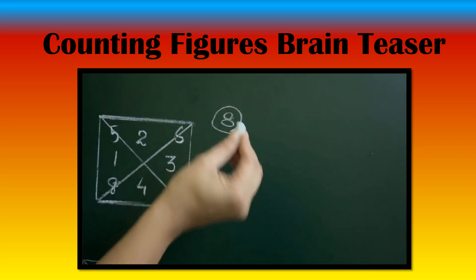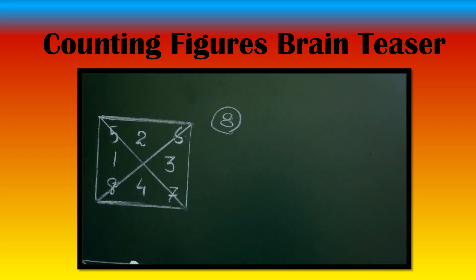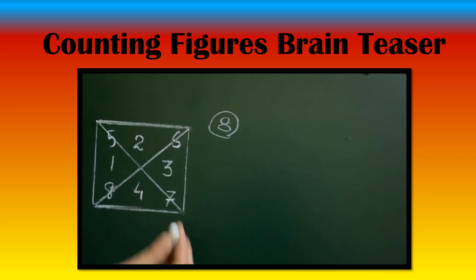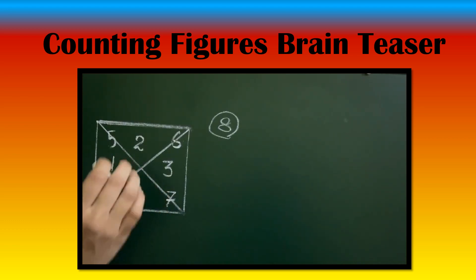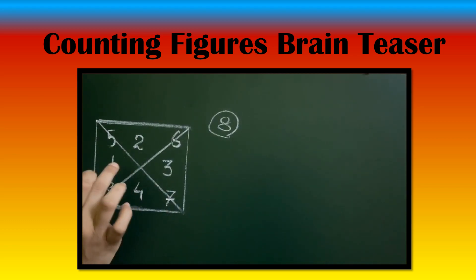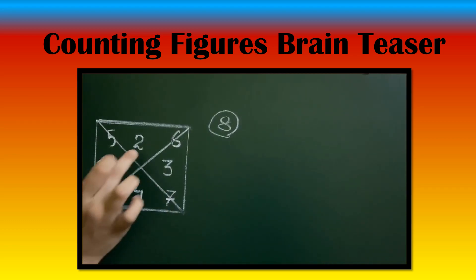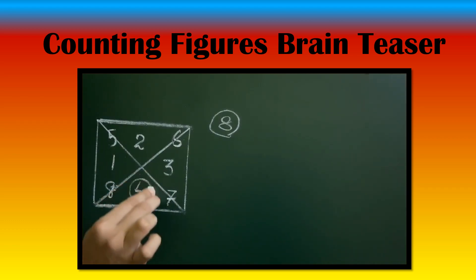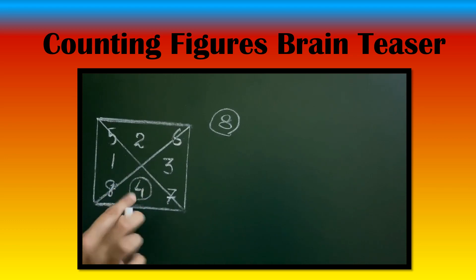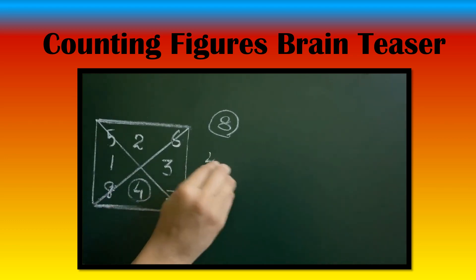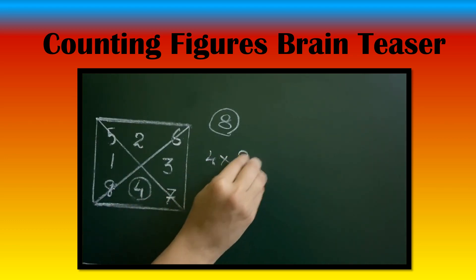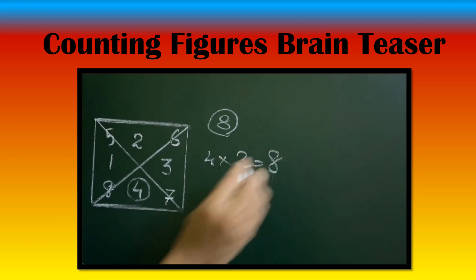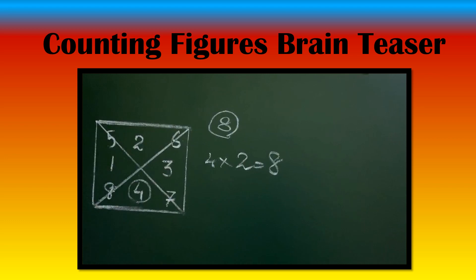There's a simple trick to find the number of triangles. Take the maximum: 1, 2, 3, 4. The maximum is 4. Just double it. That's the total number of triangles in this figure.